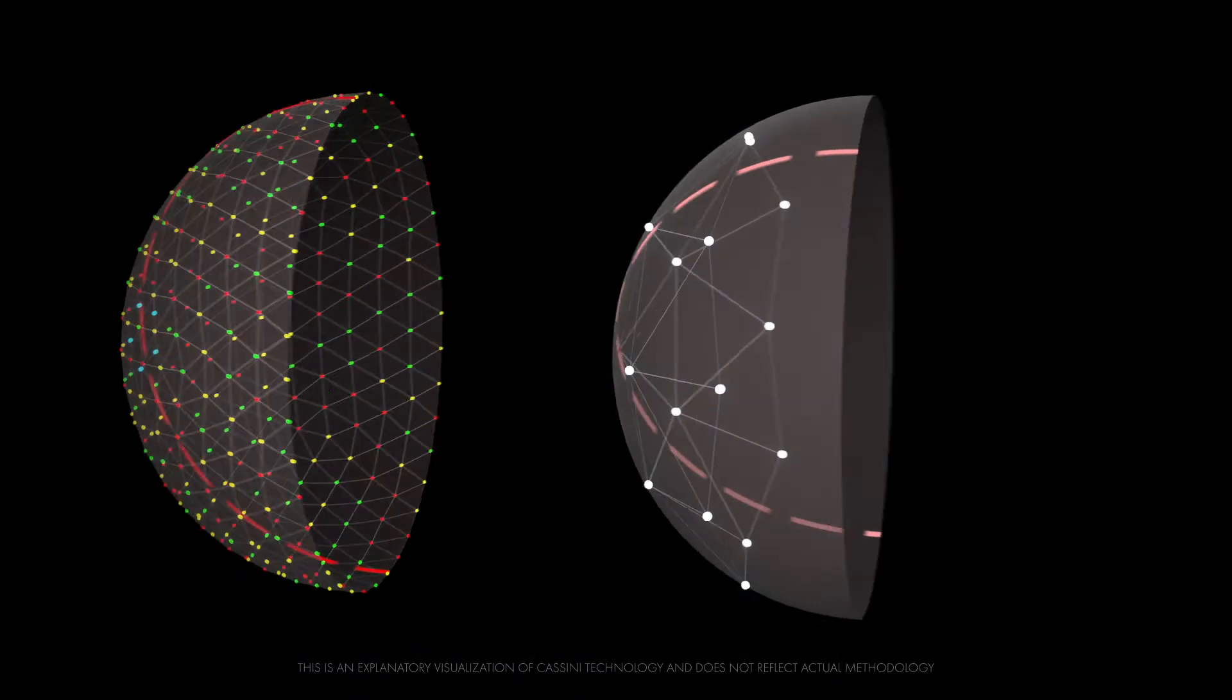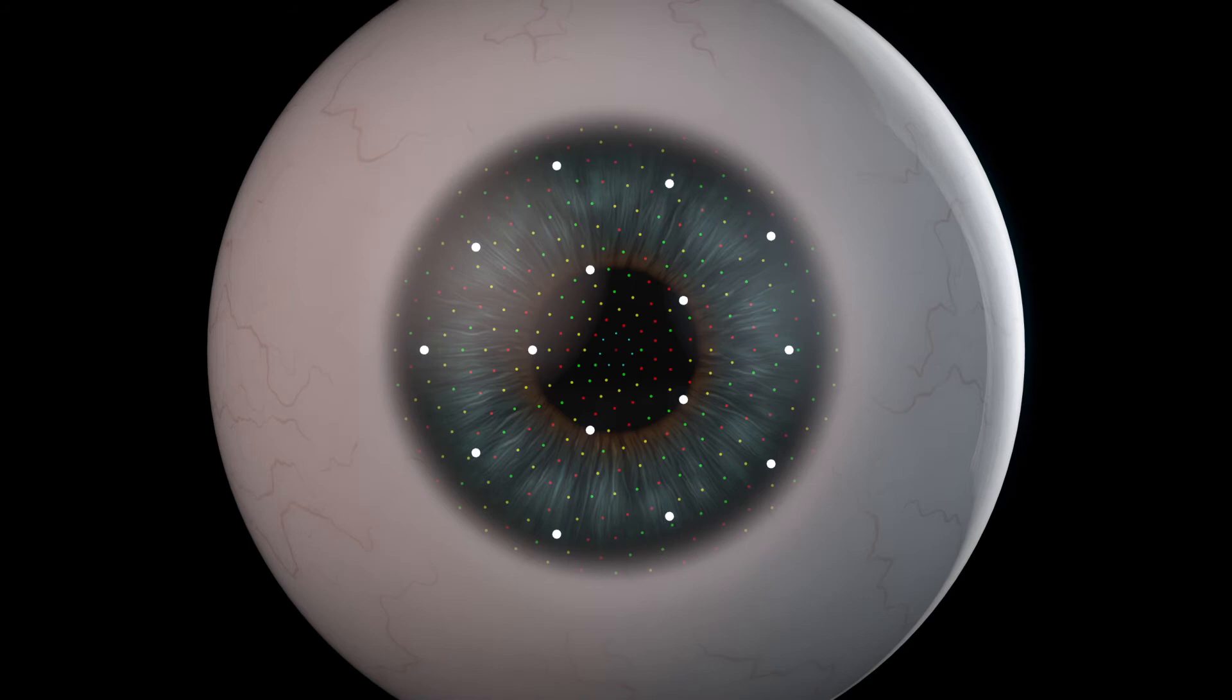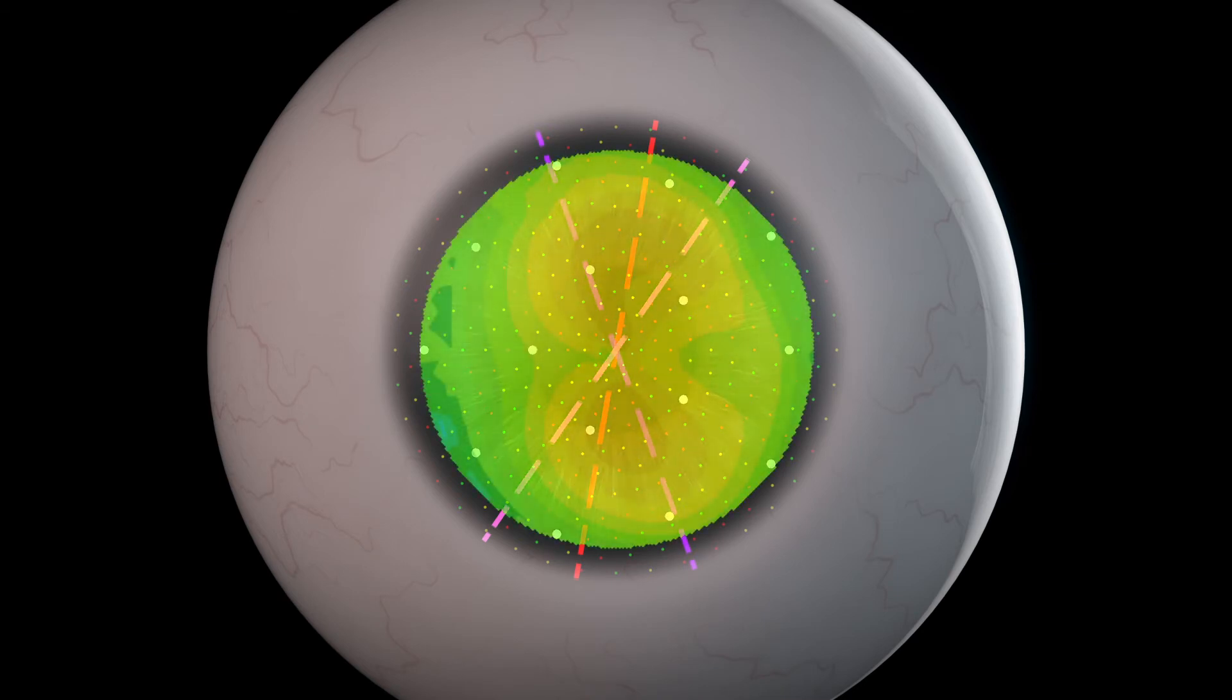Total corneal astigmatism data is measured by parallel ray tracing through the reconstructed input of the anterior and posterior corneal surfaces, taking corneal aberrations and relevant refractive indexes into account.